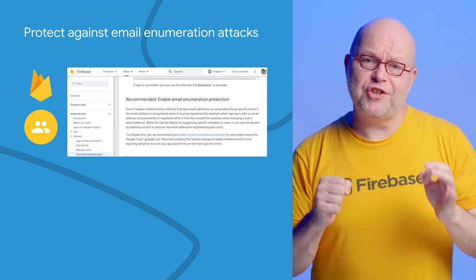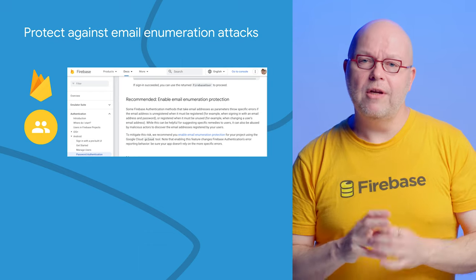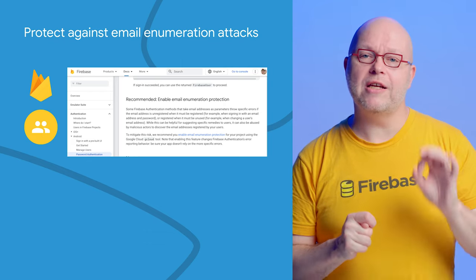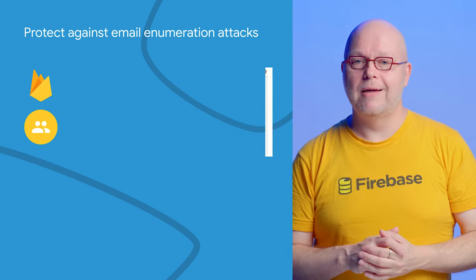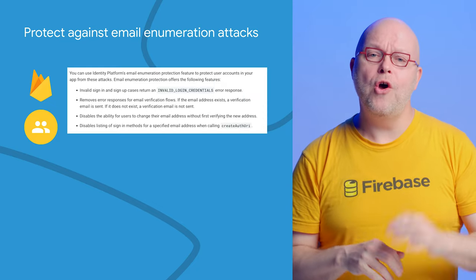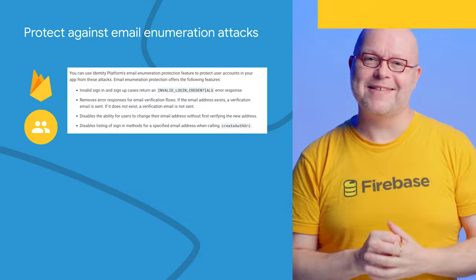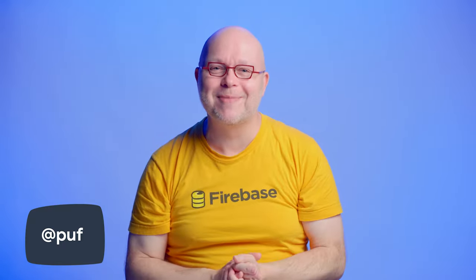You can now set up protection against such attacks on your project. With the protection on, the API no longer returns information that is useful for attackers. Check the documentation linked for full details and instructions on how to set up protection against email enumeration attacks. Those were all the updates we have time for today. If you liked this video, be sure to give it a thumbs up and subscribe to the channel. My name is Frank van Puffelen and I'll see you on a future episode of Firebase Release Notes.